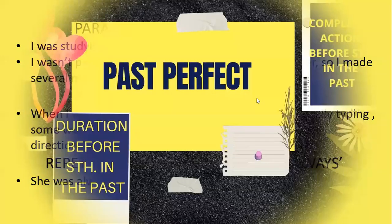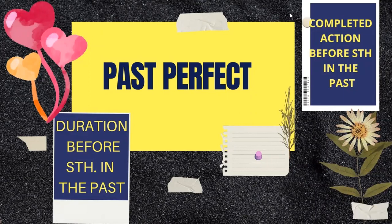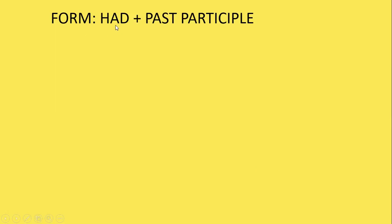Next comes past perfect tense. You use past perfect to describe a duration before something in the past or a completed action before something in the past. The sentence structure is: had plus past participle.